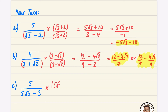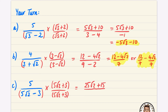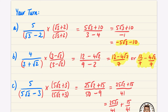For the third practice question, multiply by five root two plus three on top and bottom. The numerator is five times five root two plus three giving twenty five root two plus fifteen. The denominator: five root two times five root two is five times five times two which is fifty, minus three times three which is nine. So the denominator is 41. The answer is twenty five root two plus fifteen over 41, or split as twenty five root two over 41 plus fifteen over 41. Both are accepted.